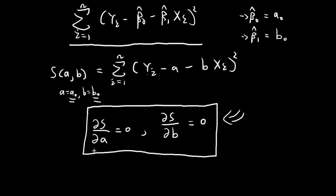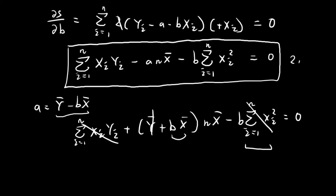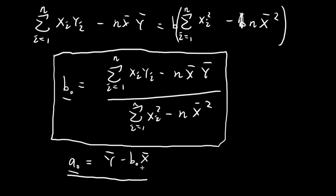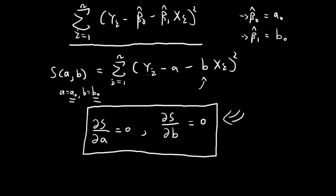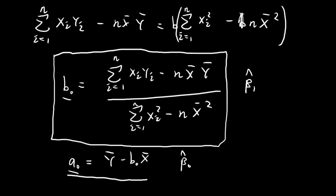So once these two conditions are satisfied, this function will be minimized. We can then set beta 1 hat equal to B0's expression, and if we do that, the sum of the squares of the residuals will be minimized. These are the two formulas for the estimates of beta 1 and beta 0.